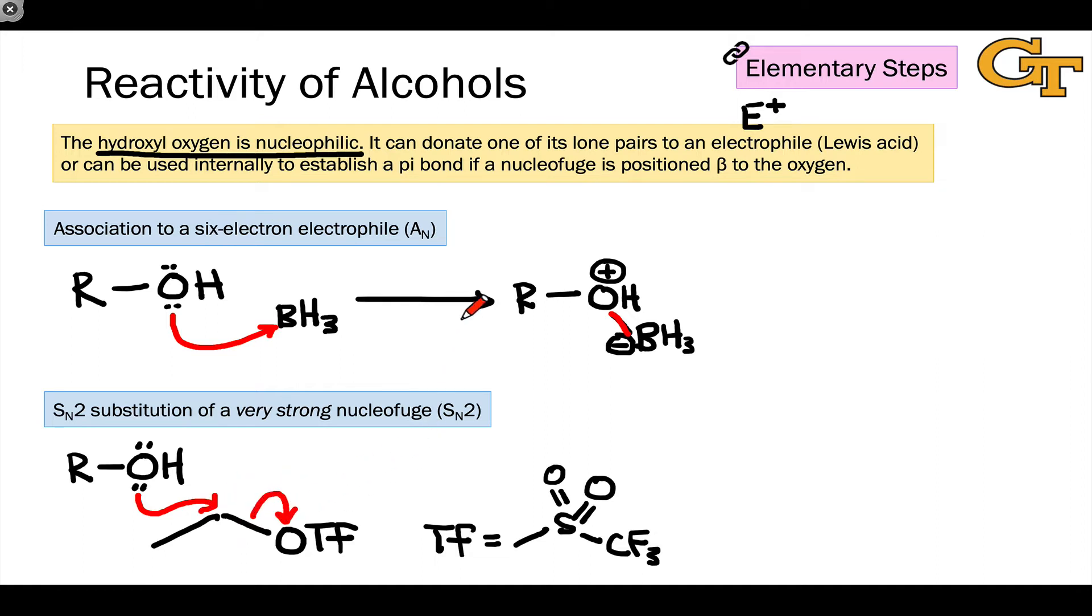Of course, a carbocation would fit into this AN step above. But the result in both cases is essentially the same. We've added an electrophilic group to the hydroxyl oxygen. And here, as in the case above, this results in a positive charge on the hydroxyl oxygen, and a tendency for that carbon-oxygen bond to break, leading to further reactivity of this R group as an electrophile.